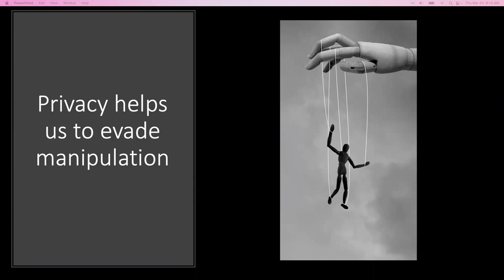When we use map applications, we reveal our homes, office, and other places we frequently reside. When we share photos, we reveal where we went for vacation. Wearable devices like smartwatches or eye trackers can learn much more intimate details — when we are excited, emotional, feel angry, or how many times we wake up at night. These are very intimate details and can be used for malicious purposes.